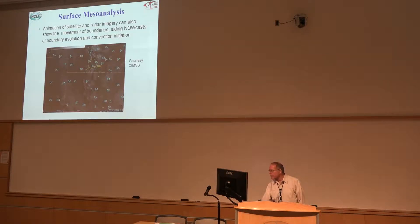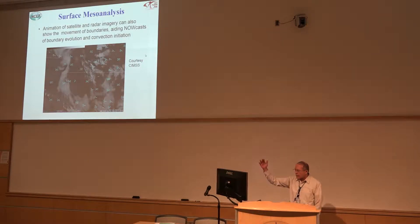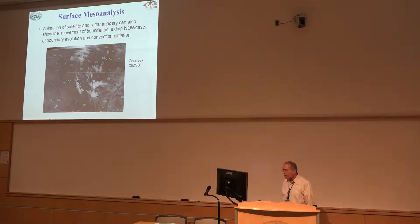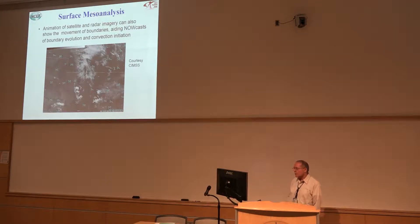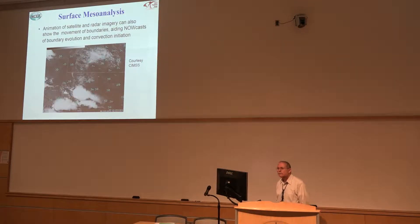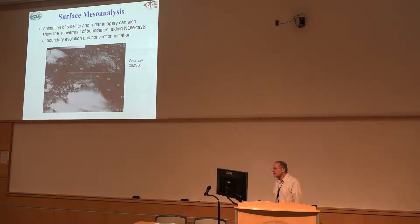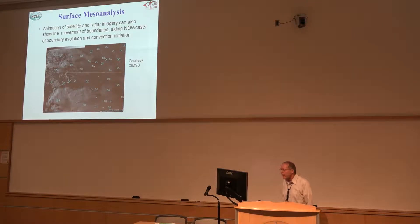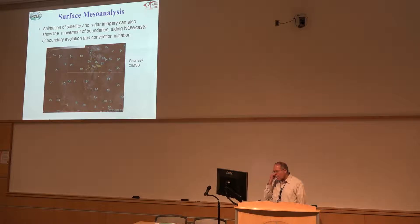Here's another situation where we have some thunderstorms in southwest Nebraska, and they're going to lay out a boundary that pushes southwestward. If we can track that boundary and know where it is, there might be new thunderstorm development on it. It is important to pay attention to these types of boundaries, whether they be dry lines or convective outflow — they can be extremely important in terms of where thunderstorm development is going to occur.